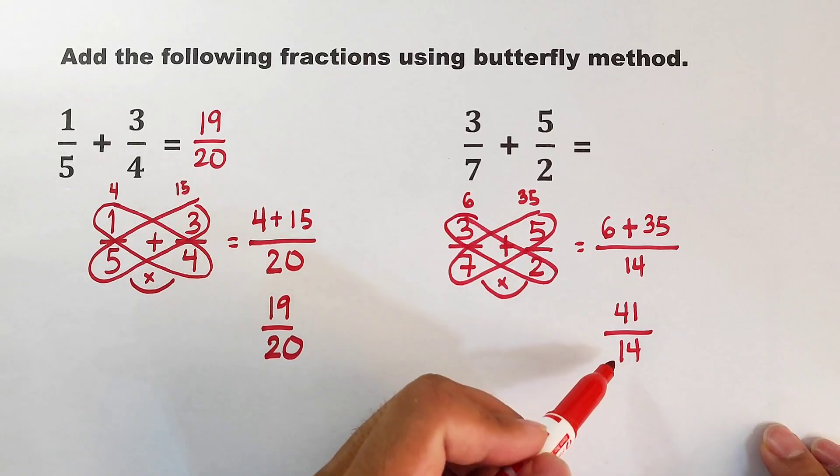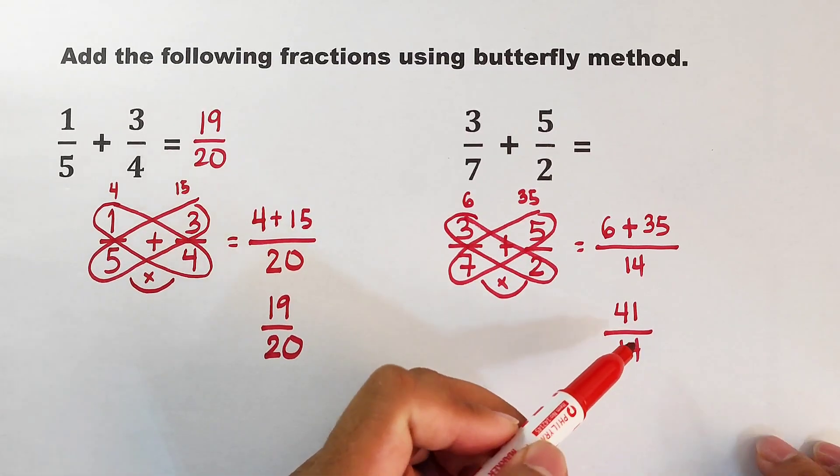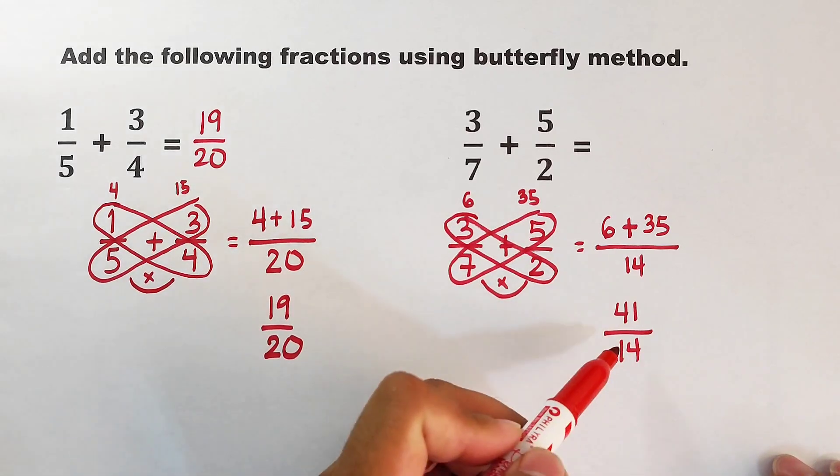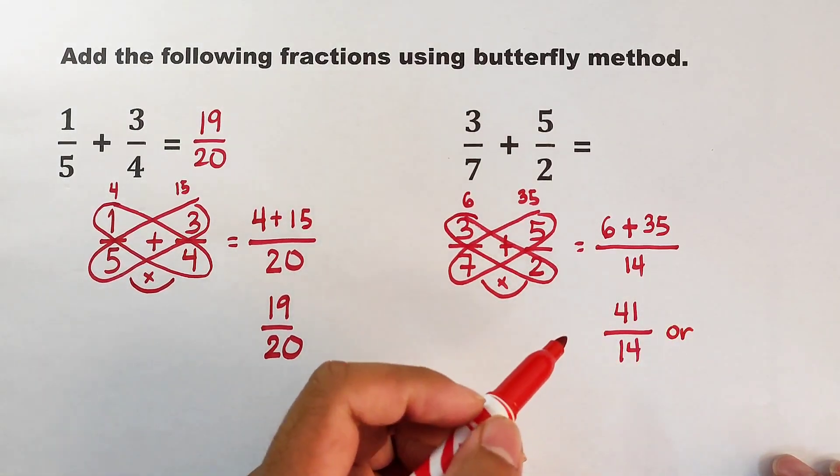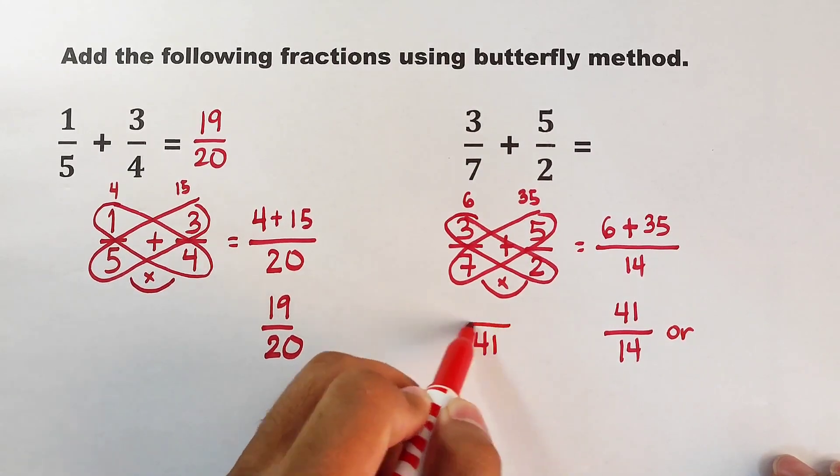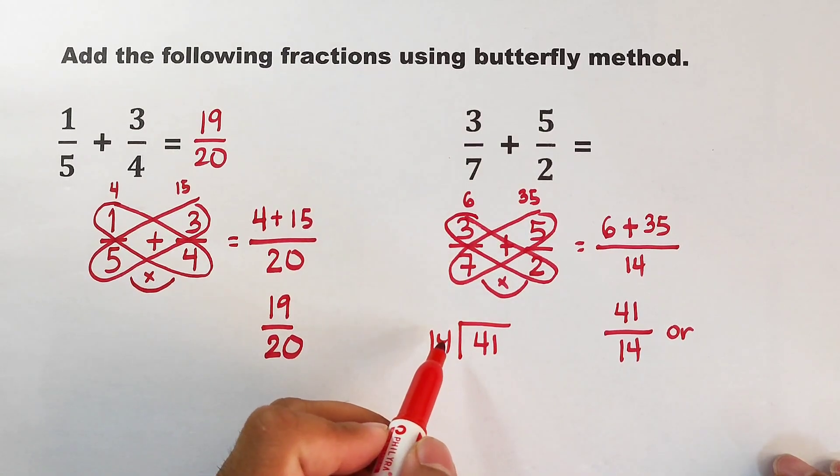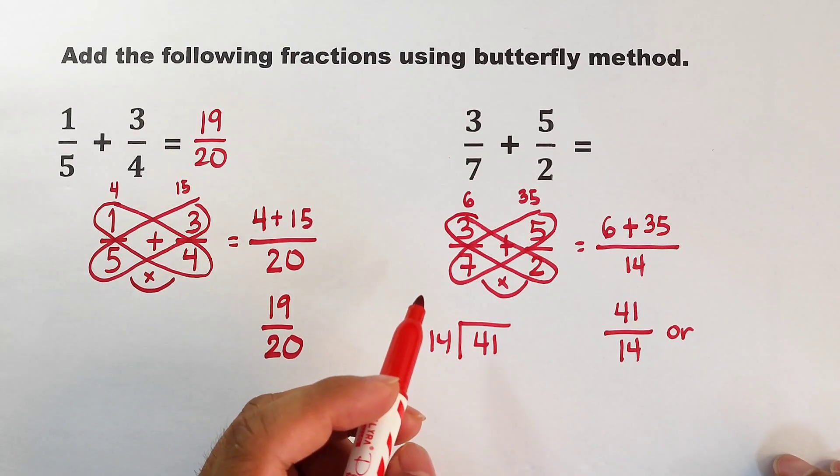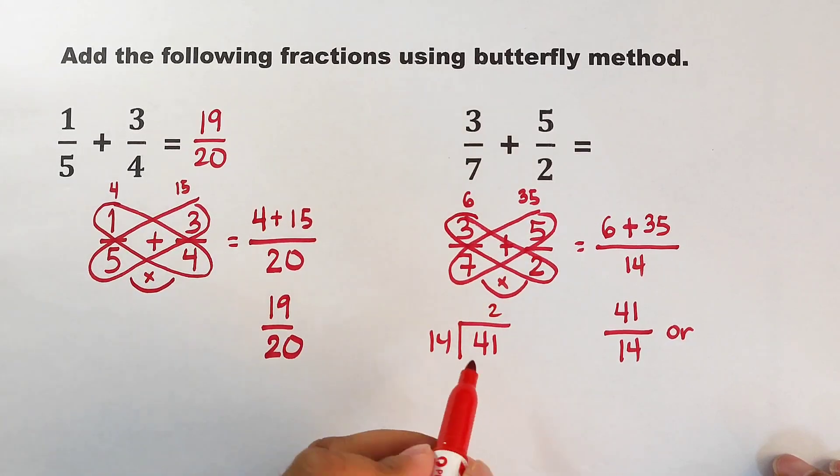Now can we still simplify this fraction? No, but the problem here is that this one is an improper fraction. We can rewrite it into a mixed number. So we will divide 41 by 14. 41 divided by 14, that would be